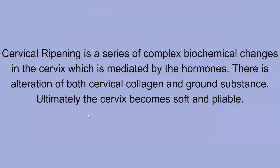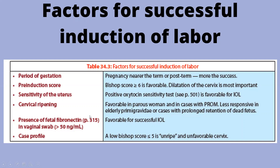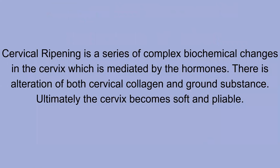Cervical ripening is a series of complex biochemical changes in the cervix, mediated by hormones. There is alteration of both cervical collagen and ground substance. Ultimately, the cervix becomes soft and pliable — so cervical ripening basically refers to the cervix becoming soft and pliable.